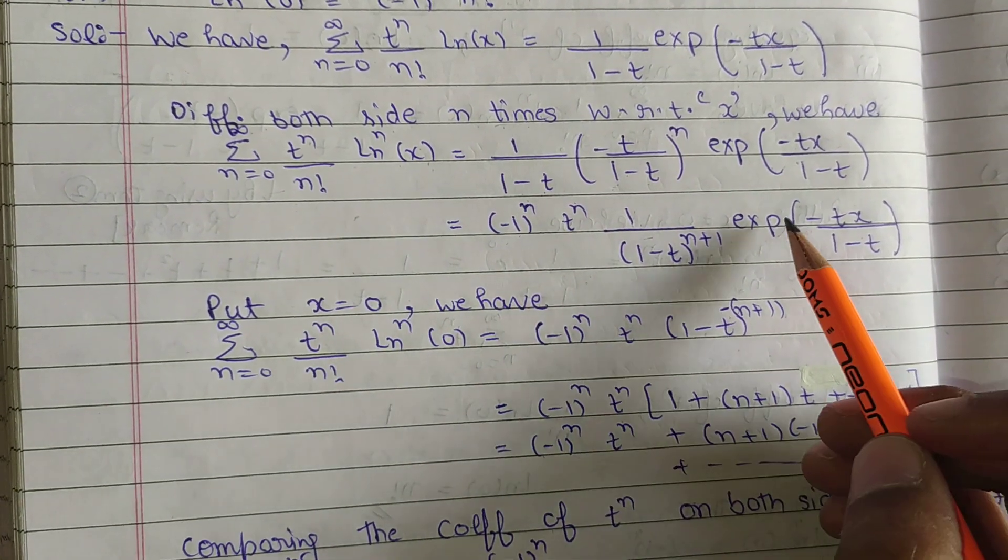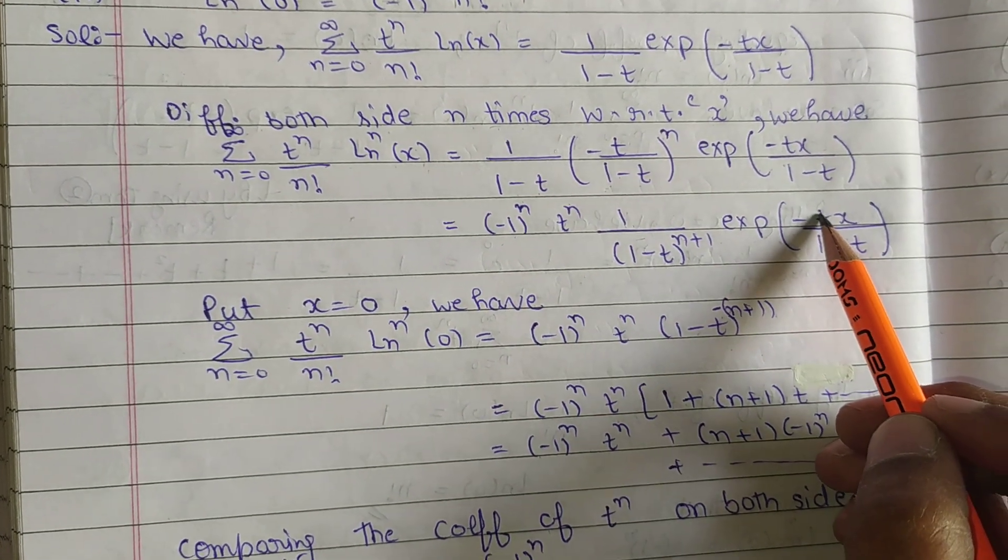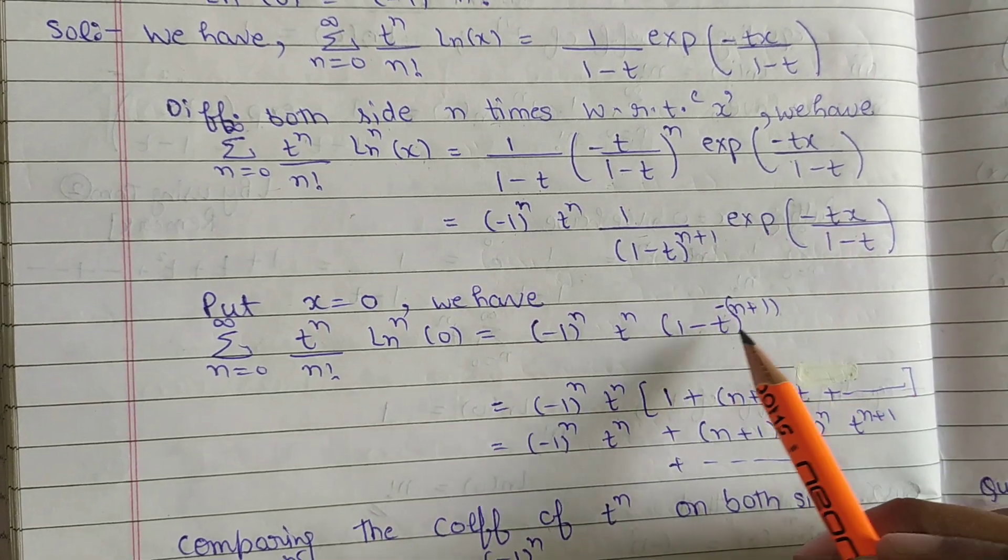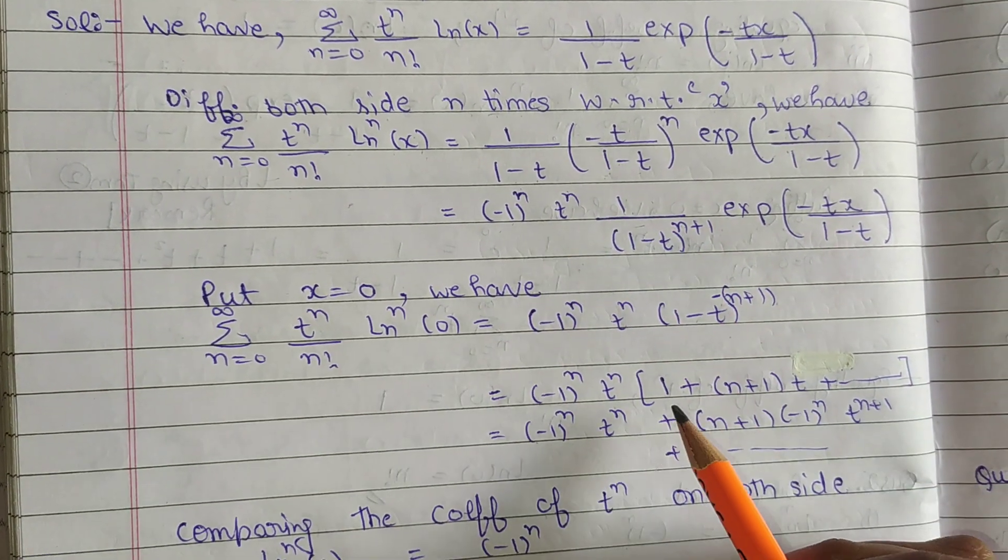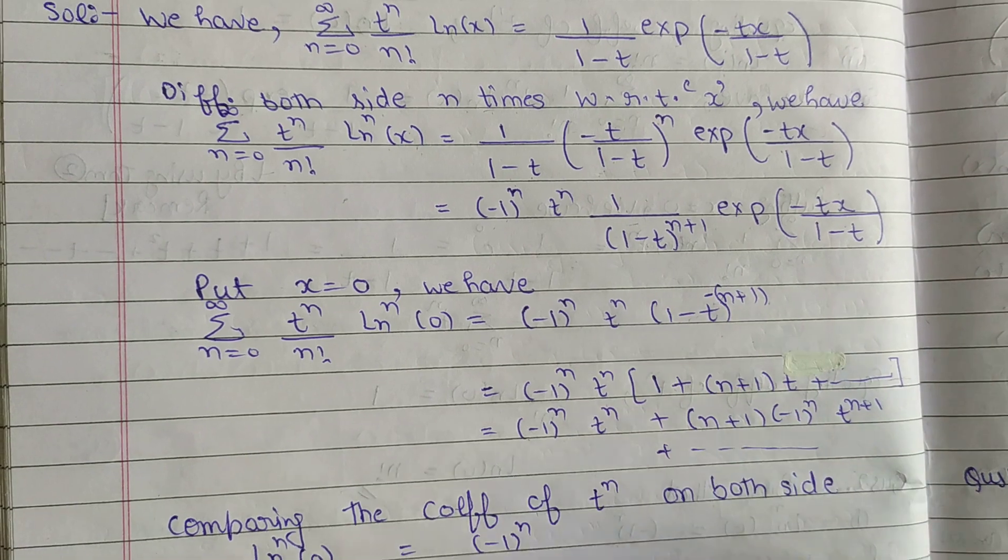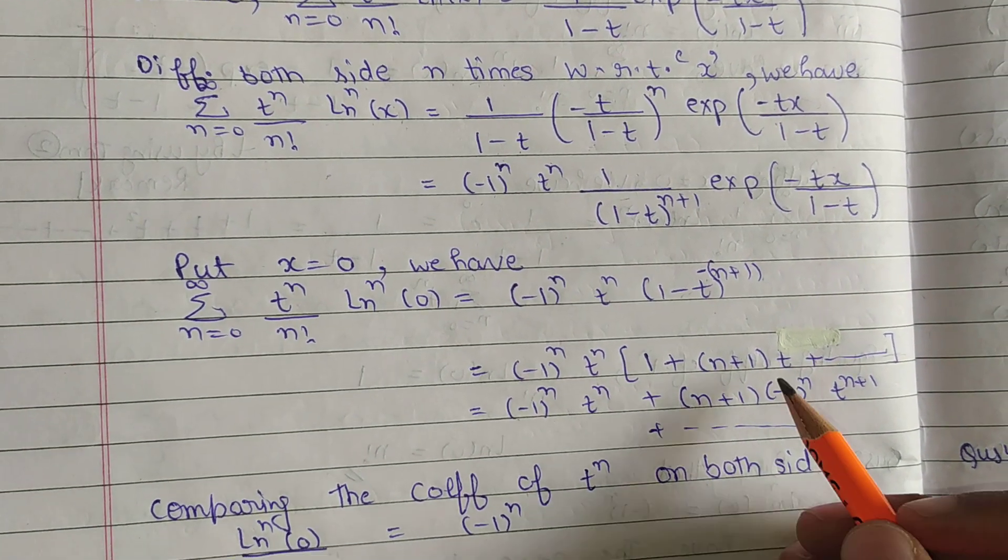Put 0 in place of x, we have e^0 is equal to 1. Then expansion (1 + nx + (n+1) into t plus...)